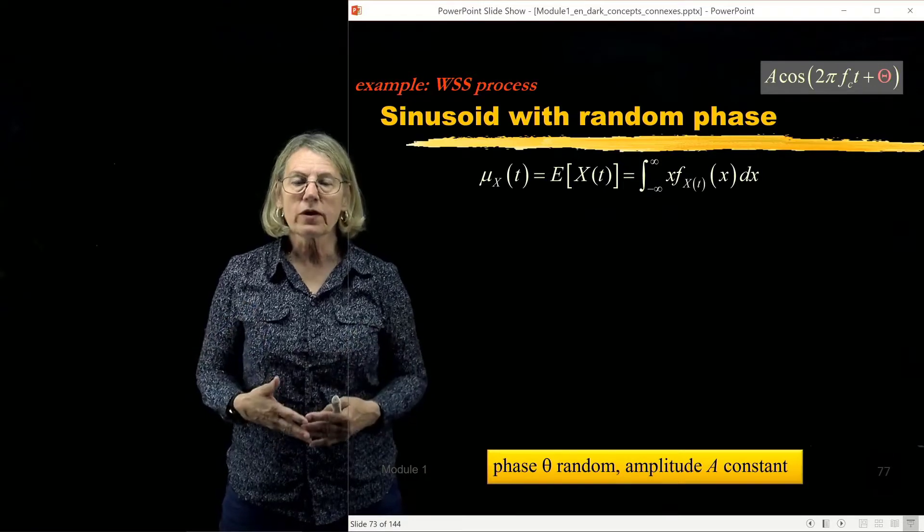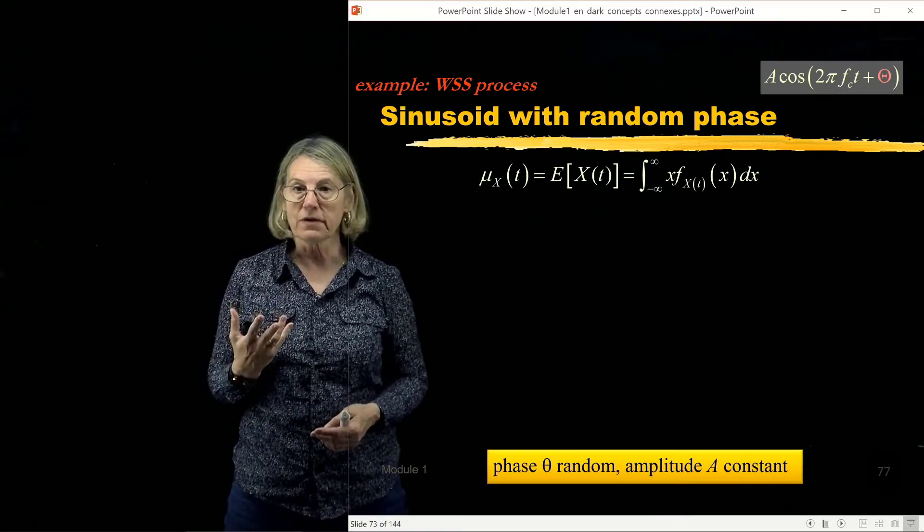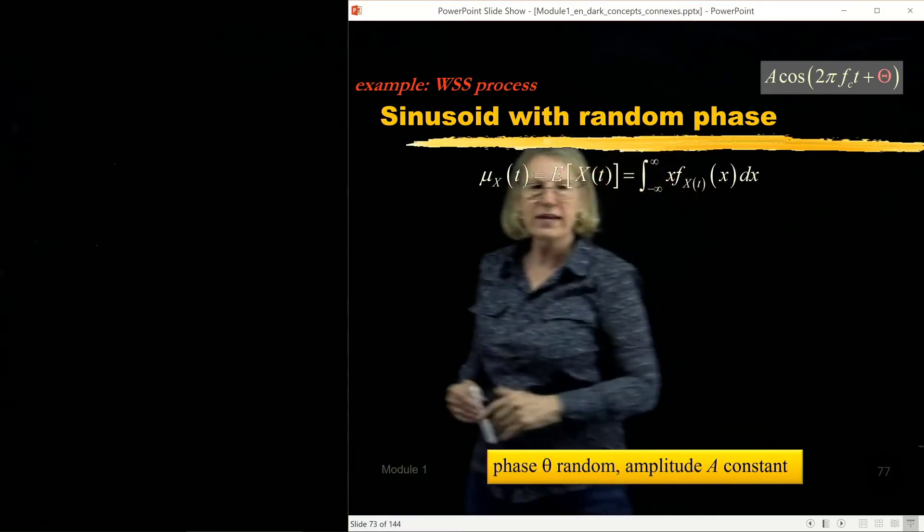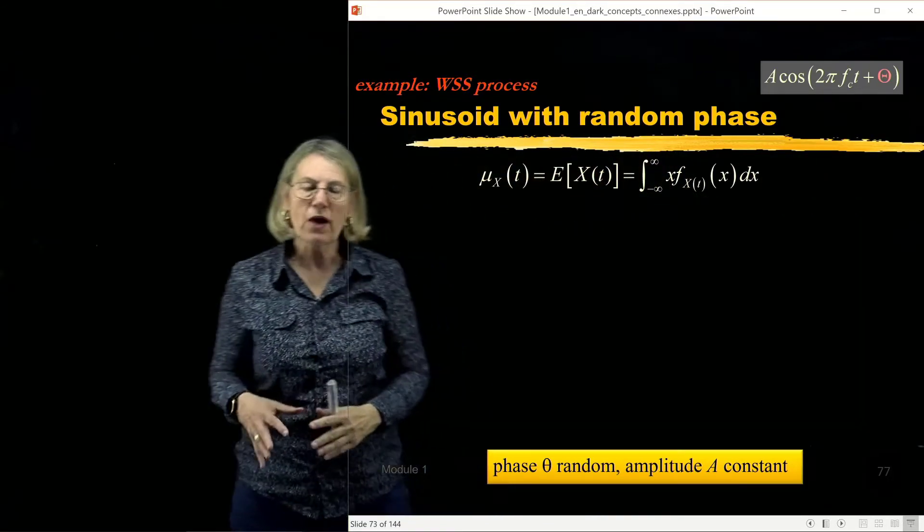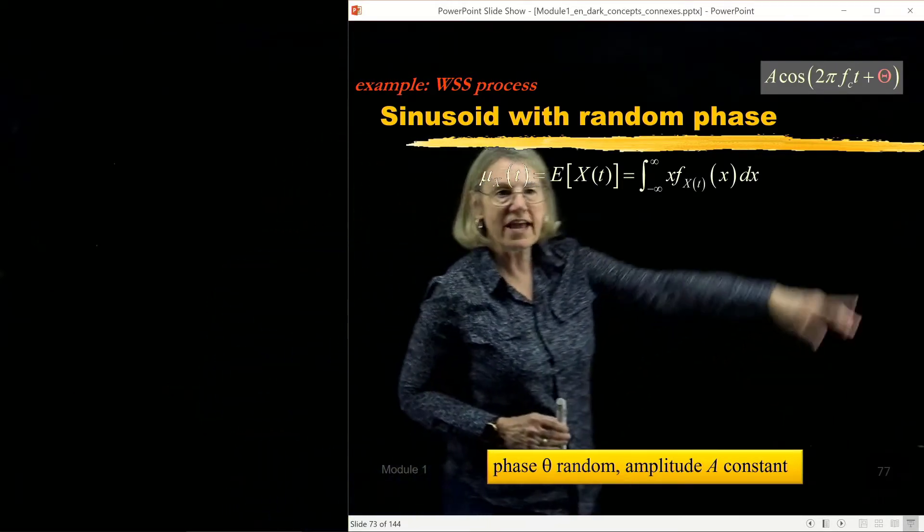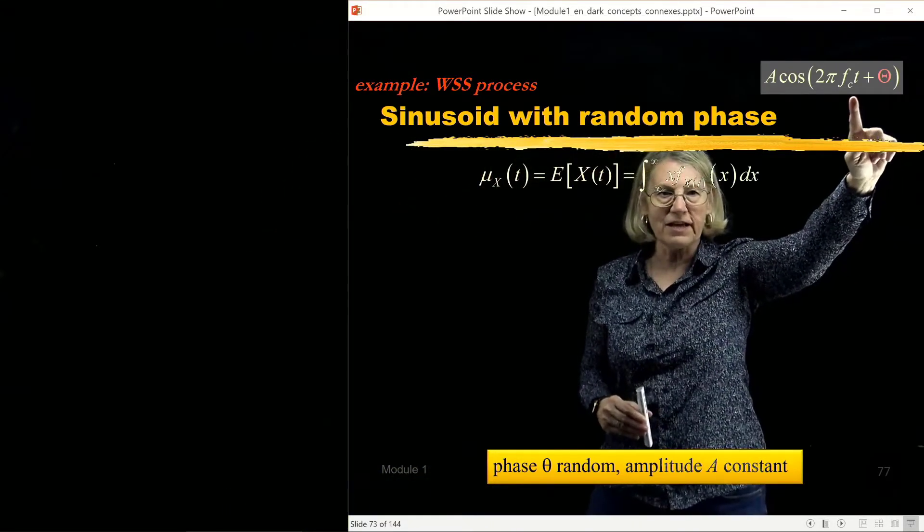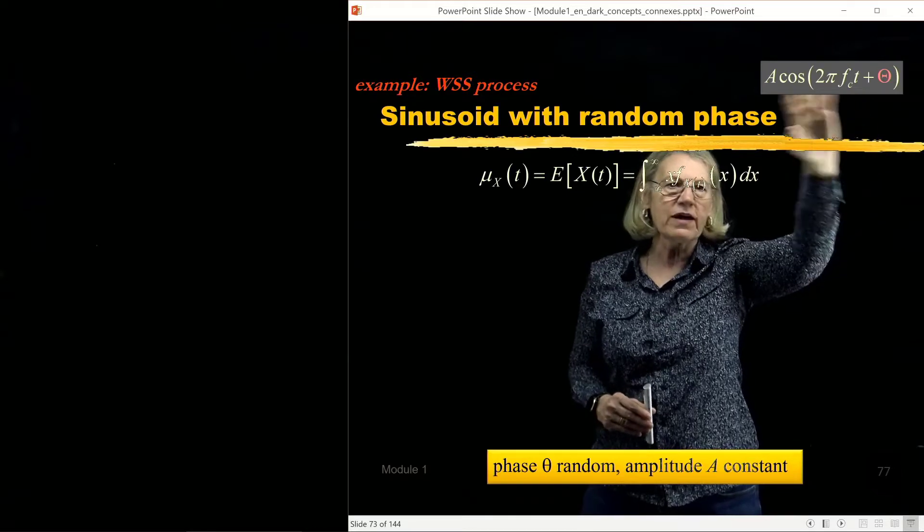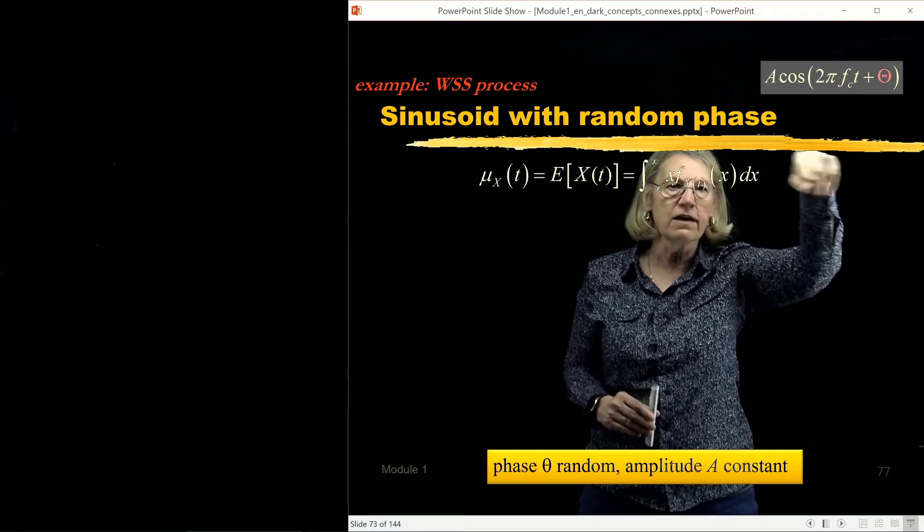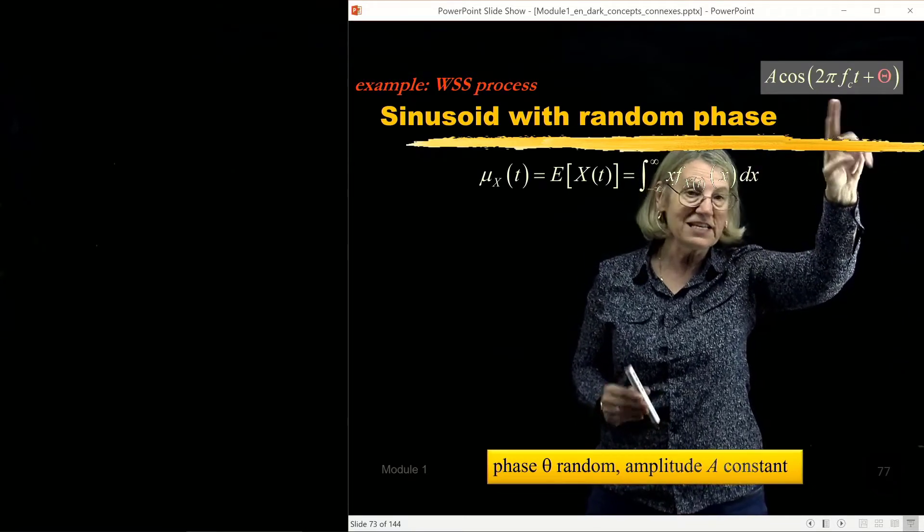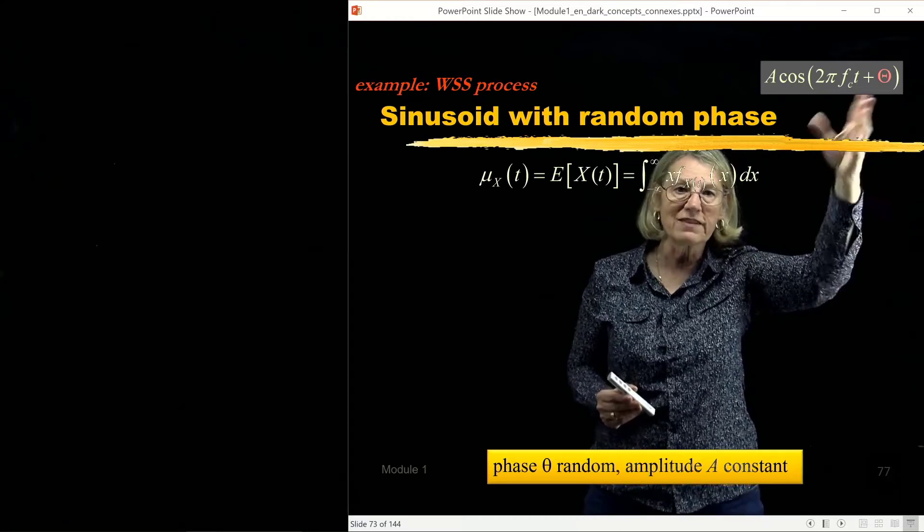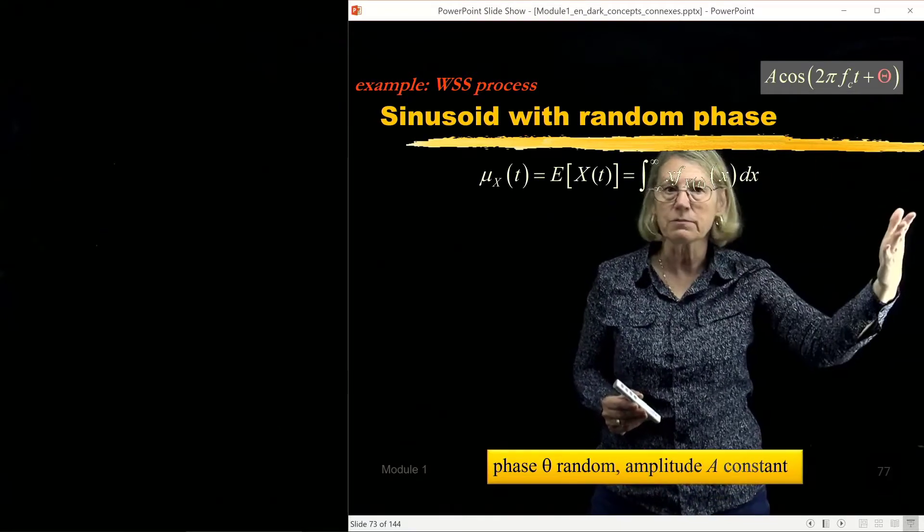So let's start with a sinusoid whose phase is random and it's a random variable. Okay, so I have theta here which is a random variable. Now I'm going to describe this process which is a function of time. So it's a time which is identified here. So in this expression for the sinusoid the amplitude is constant in A. The carrier frequency fc is constant. Of course this function is sinusoidal, it varies with time and there's some phase which gives it the randomness in it.